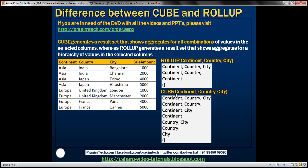Whereas when we use CUBE on the same set of three columns, this is going to produce sum of sale amount based on all the possible combinations of these three columns. So we are going to get sum of sale amount based on: all three columns (continent, country, city); continent and country; continent and city; just continent; country and city; just country; just city; and the grand total.